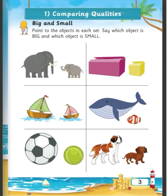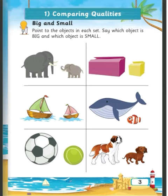Students, now come to the next picture that is of Fish. The first fish is Big and the second fish is Small. Then the next picture of Ball, and the first ball is Big and the second ball is Small.